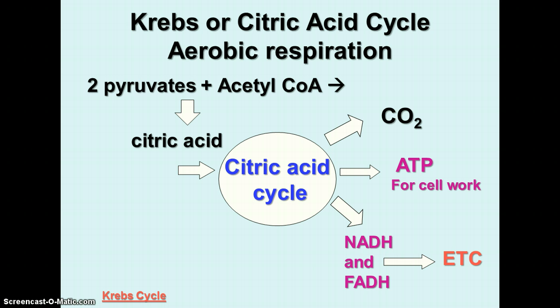Citric acid goes through a series of changes in the citric acid cycle, producing carbon dioxide, some ATP for cell work, and some NADH and FADH2, which then go to the electron transport chain to produce ATP for the cell.